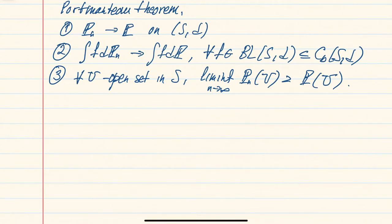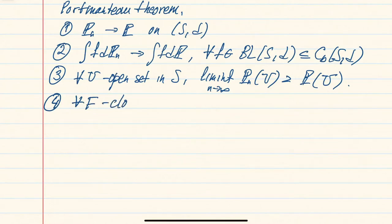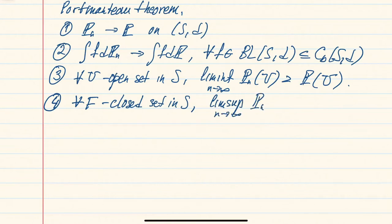The approximation is done by considering the distance from the complement of the open set and rescaling it. Because you approximate from below, that's where the lim inf comes from. The next condition is the equivalent statement for closed sets: if you take a closed set in S, then the lim sup of the probabilities along the sequence will be less than or equal to the limiting probability.